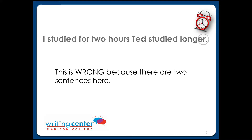How do you know if a sentence is a run-on? First, look to see if there are two separate subjects, each with their own action in the same sentence. In a simple sentence, the subject comes before the action. In this sentence, the subject is 'I' and it's followed by the action 'studied.' Next, look to see if the rest of the sentence stays focused on that subject and action. It looks like there's a new subject — Ted — with his own action. That's why we have a run-on.